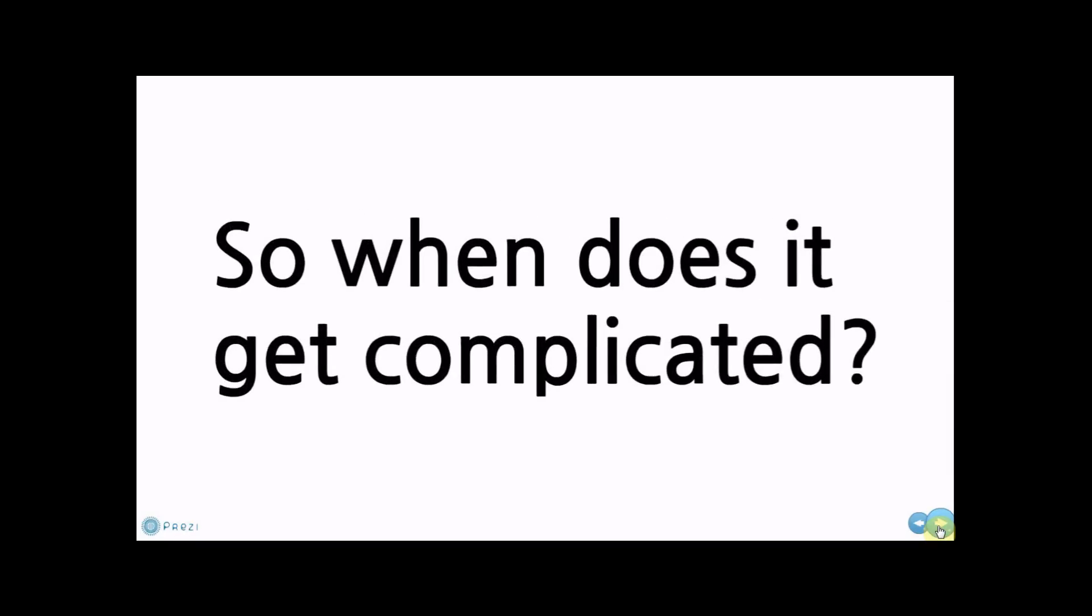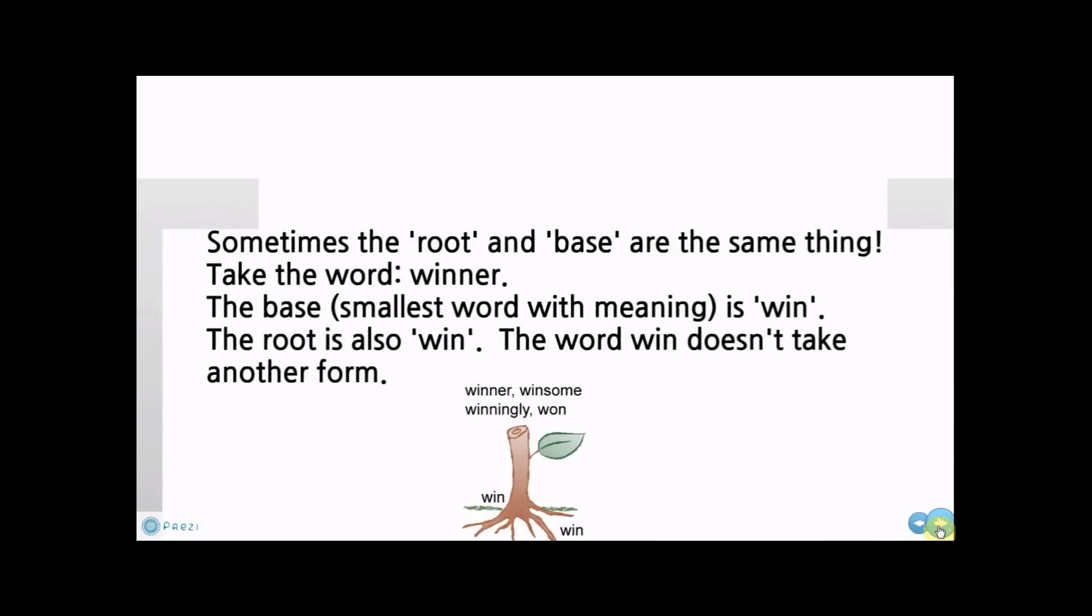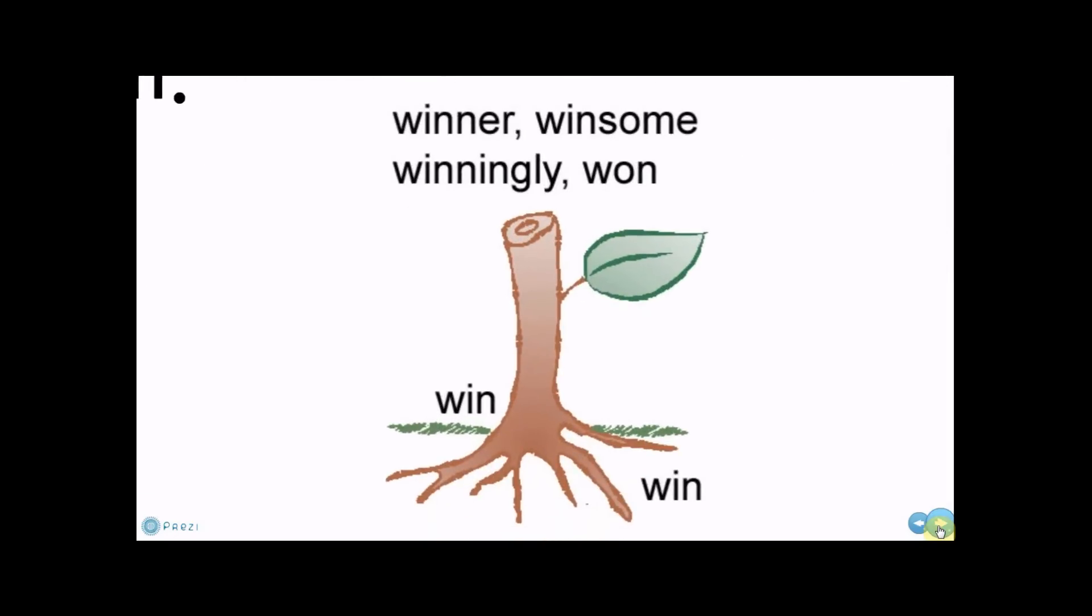So when does it get complicated? Sometimes the root and base are the same thing. Take the word winner. The base, smallest word with meaning, is win. The root is also win. The word win doesn't take another form. So the root is win. The base word is win.